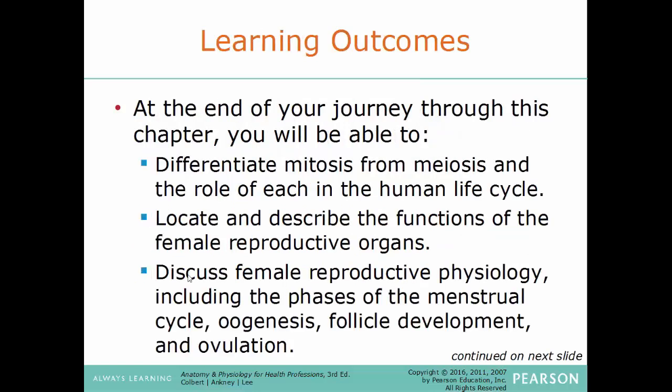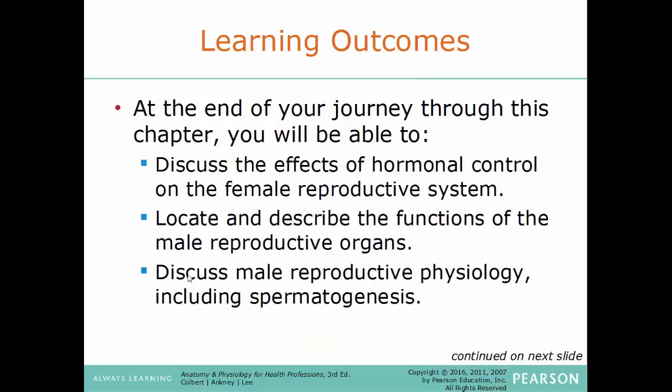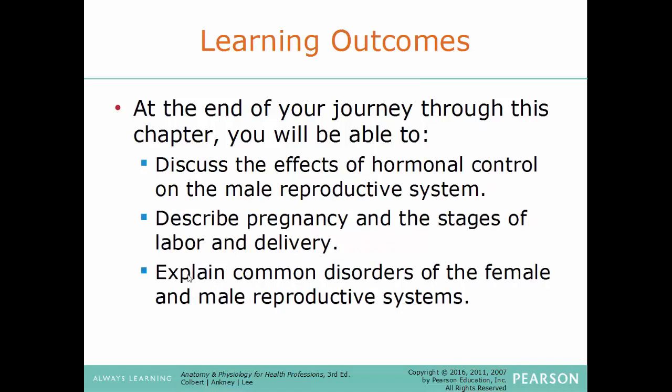Learning outcomes for this chapter: be able to differentiate mitosis from meiosis and the role of each in the human life cycle; locate and describe the functions of the female reproductive organs; discuss female reproductive physiology including the menstrual cycle, oogenesis, follicle development and ovulation; discuss hormonal control on the female reproductive system; locate and describe the functions of the male reproductive organs; discuss spermatogenesis; describe pregnancy and stages of labor and delivery; and explain common disorders of the female and male reproductive systems.